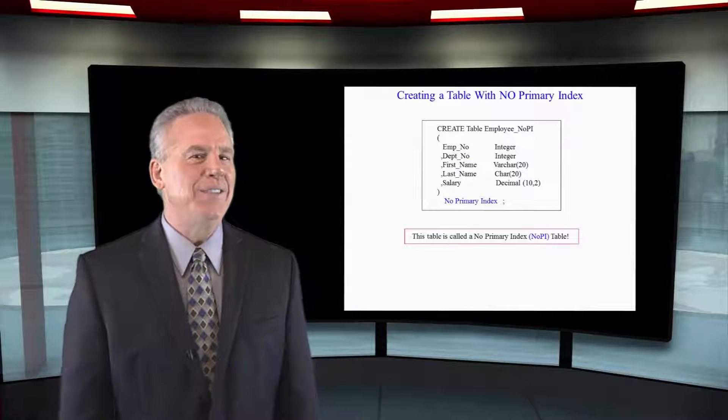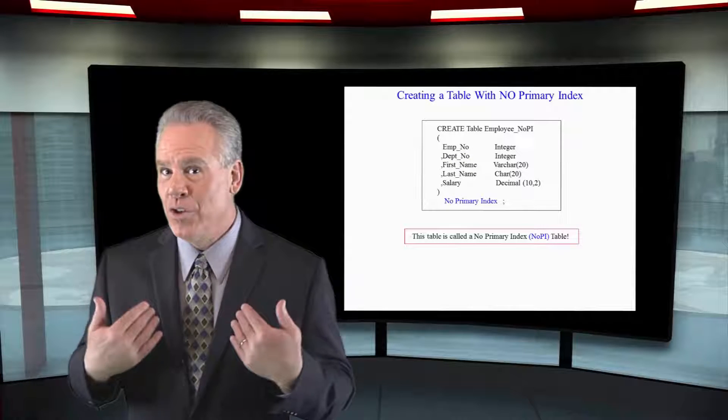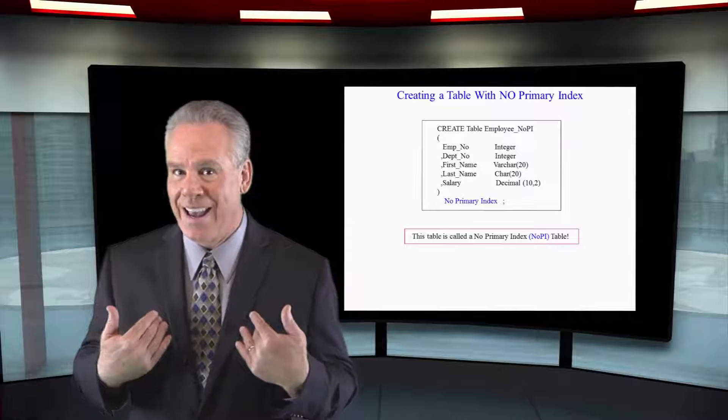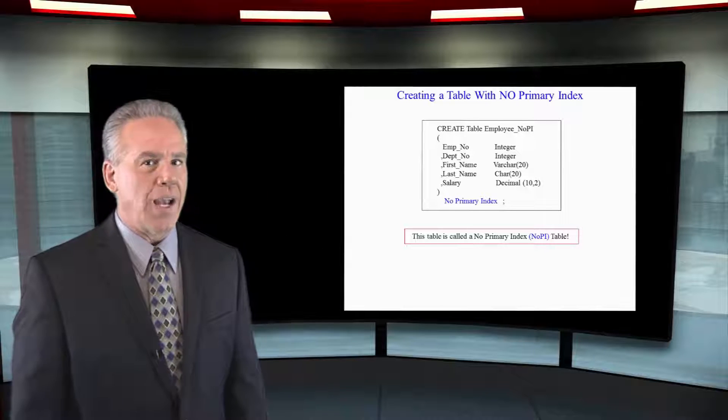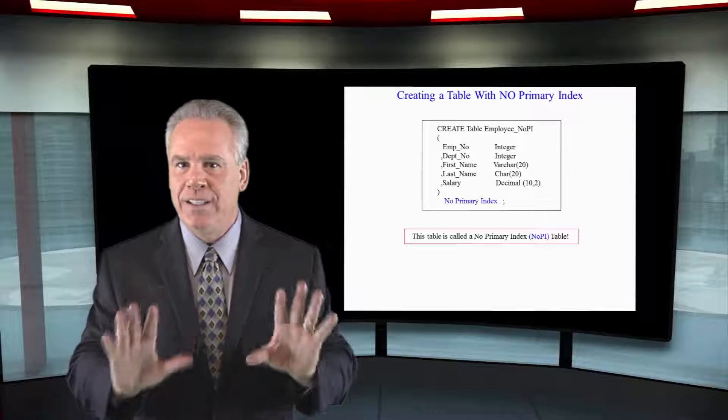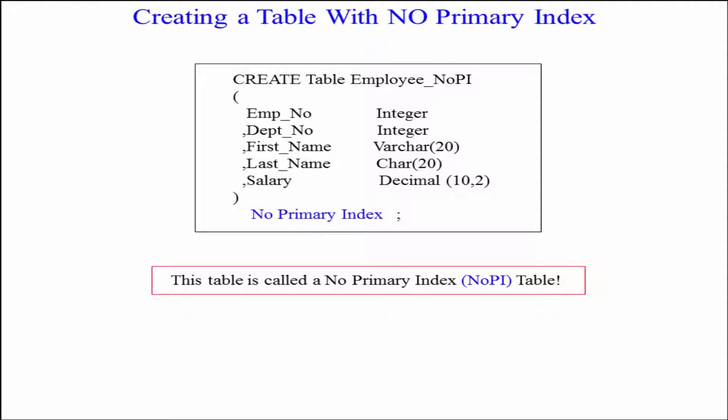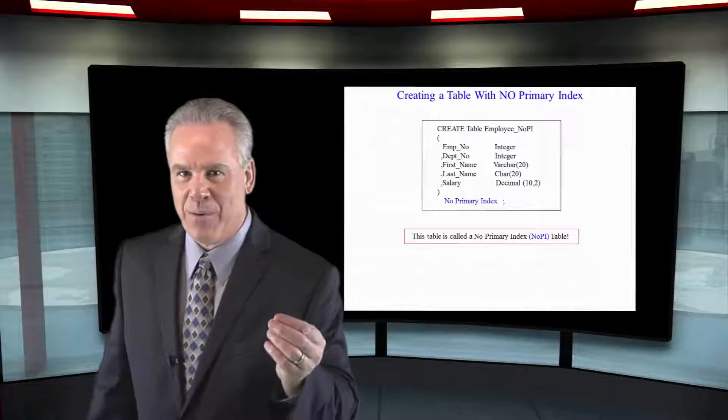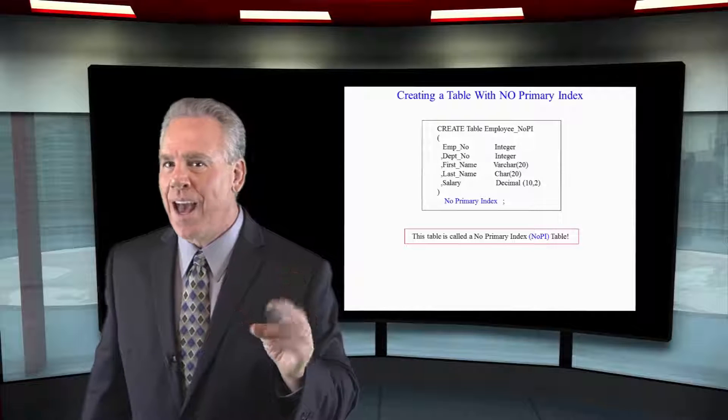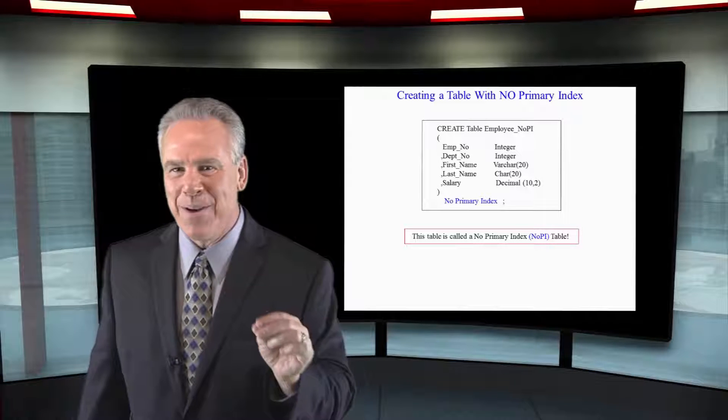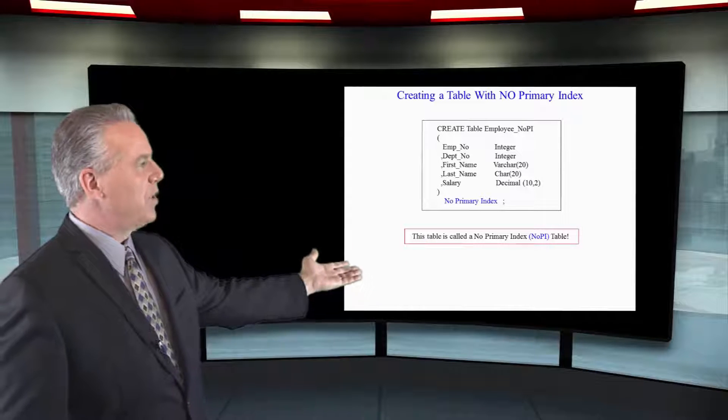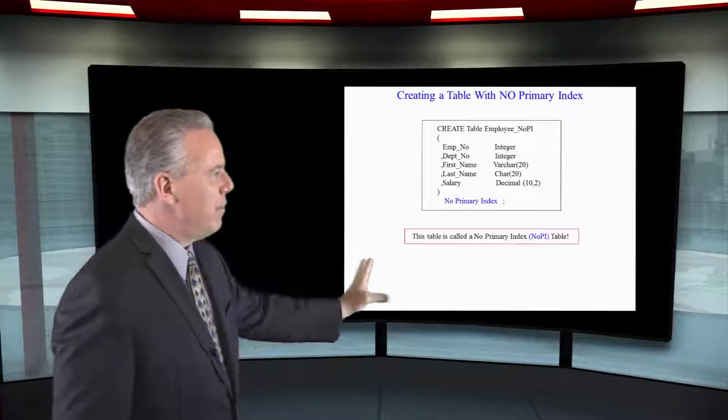This is relatively new to Teradata when you've been around like 20 years as I have. This is called the NOPI table. It specifically says, I don't want a primary index. Distribute the data in the table perfectly evenly. This is used often in a staging table or any time you create a column or table. Once again it's called a NOPI because it's got no primary index. And as you can see I specifically state no primary index.